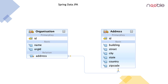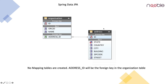Now let us see our tables. We have the organization table with an ID field as the primary key, followed by org ID, the name of the organization, and a foreign key which refers to the address entity which is address ID. The address table has state, country, city, building, zip code and street. By default, Hibernate is not creating any mapping tables, and the address ID will be the foreign key in the organization table.